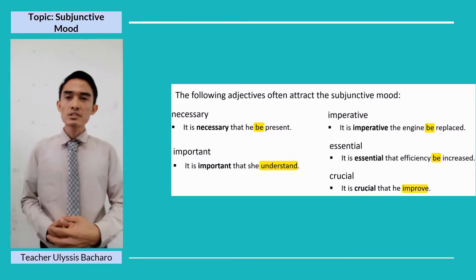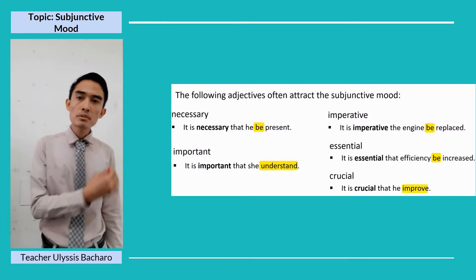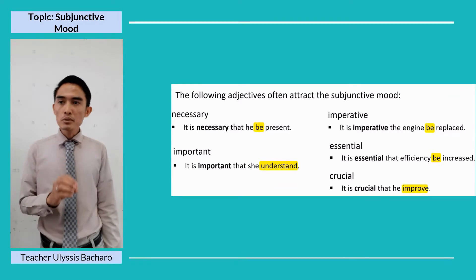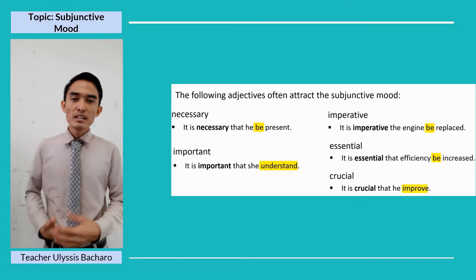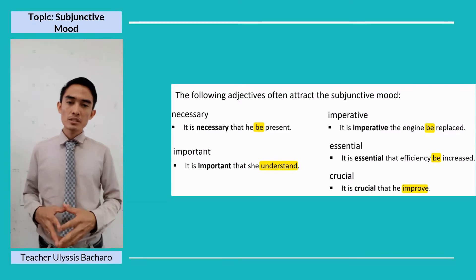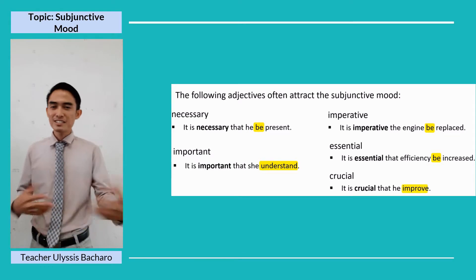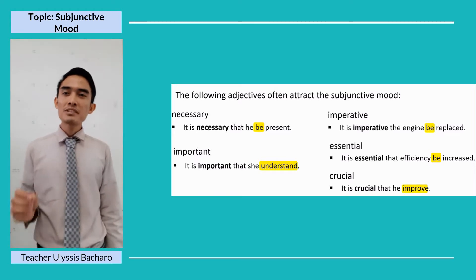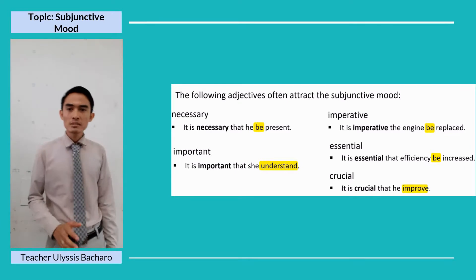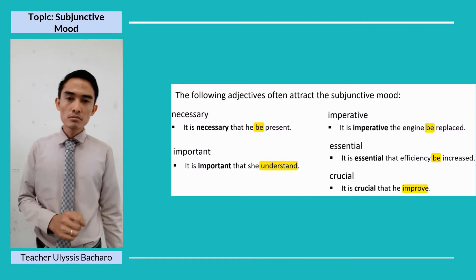In some variations of English, some native speakers would use the word 'should,' like 'It is imperative the engine should be replaced,' and these are acceptable. Also, as you can see, some examples have 'that' but this one doesn't. We should be aware that in informal English, especially when speaking, we sometimes drop the word 'that' because it would still mean the same. So 'It is imperative the engine be replaced' and 'It is imperative that the engine be replaced' are both fine. 'It is essential that efficiency be increased.' 'It is crucial that he improve' — instead of 'he improves.'